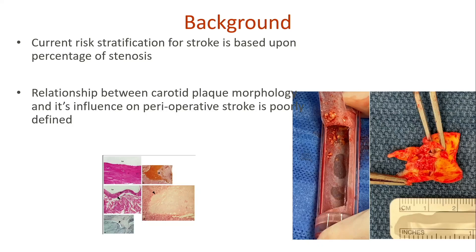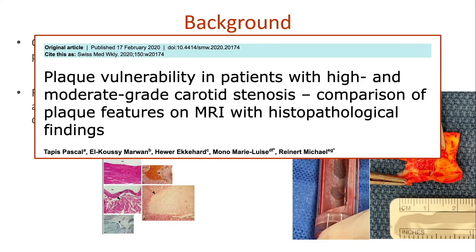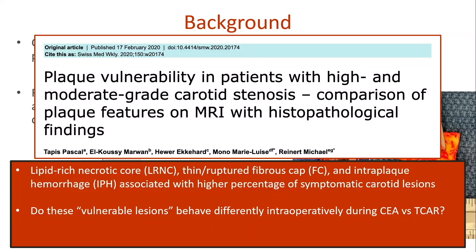Currently, risk stratification for stroke is based upon percentage of stenosis. This is a good indicator of embolic risk during intervention, but it's not perfect. There's some ambiguity in the literature regarding the relationship between carotid plaque morphology and its influence on perioperative stroke, and this is pretty poorly defined. We're all familiar with carotids that have a nice smooth lesion versus those with a cottage cheese-like plaque, where you think you can't believe you're putting stents and wires across it. Different papers have tried to stratify patients by plaque morphology, and lipid-rich necrotic core plaques have a higher embolic risk. So we looked at whether these vulnerable lesions behave differently intraoperatively during CEA versus TCAR.